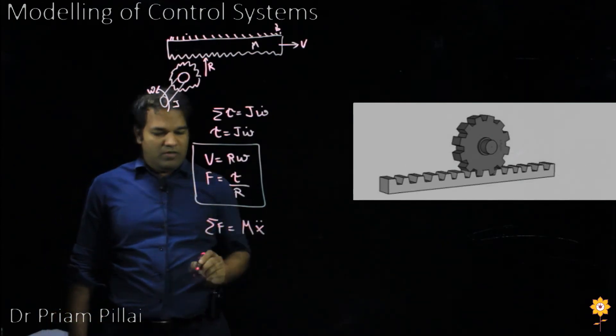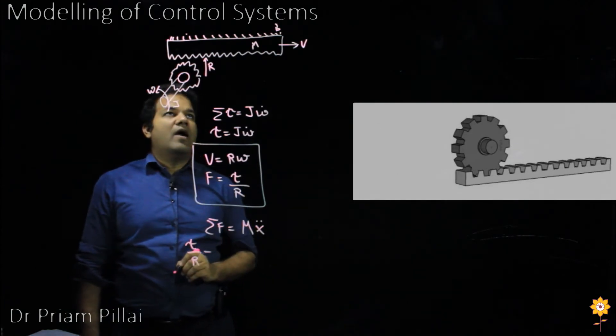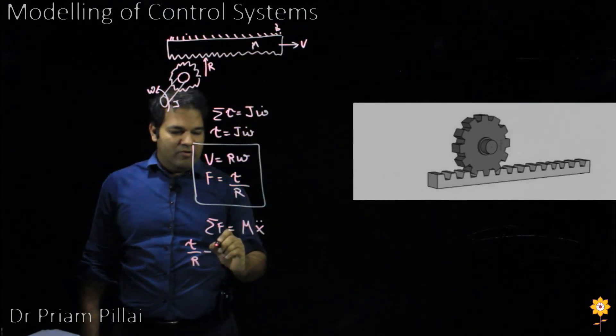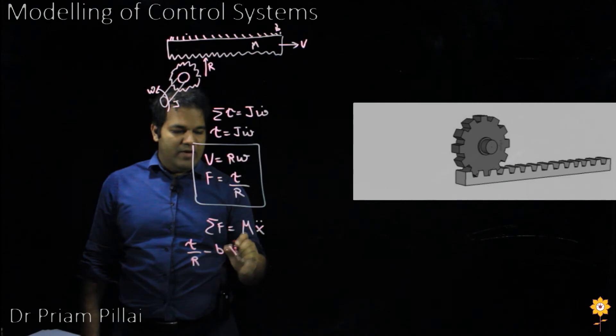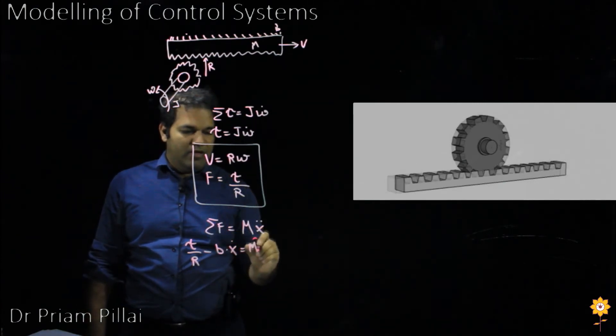And what forces are acting on it? Well, we have the force due to the torque, and we have the damping force which resists the motion of that. So it will be negative. It will be B multiplied by X dot or V, the velocity in this case, would equal M X double dot.